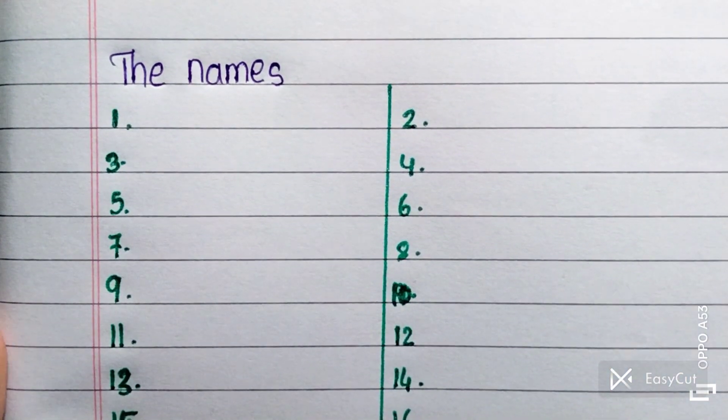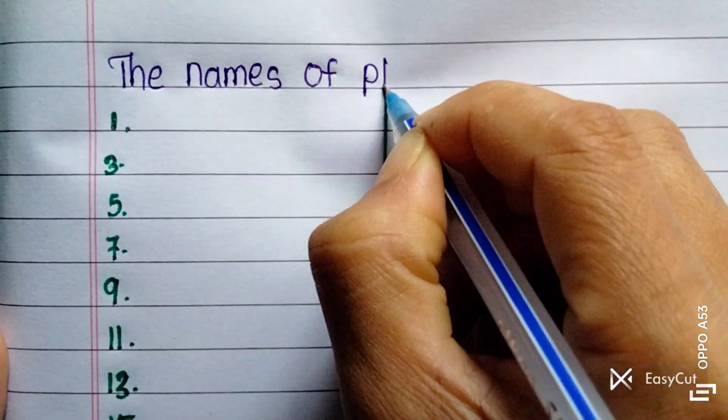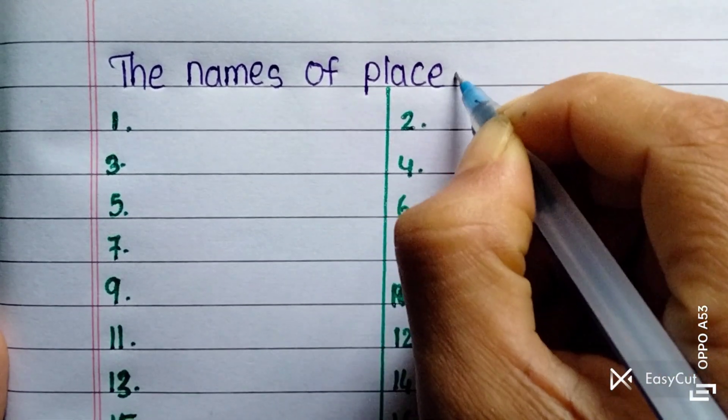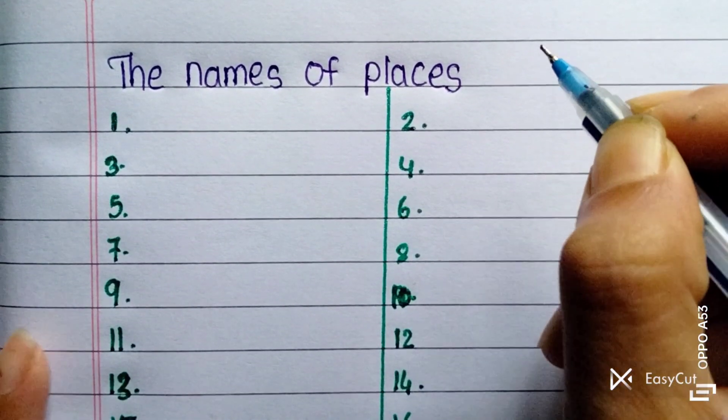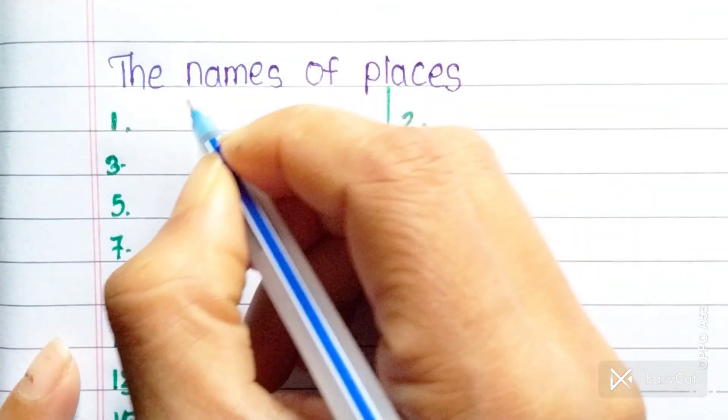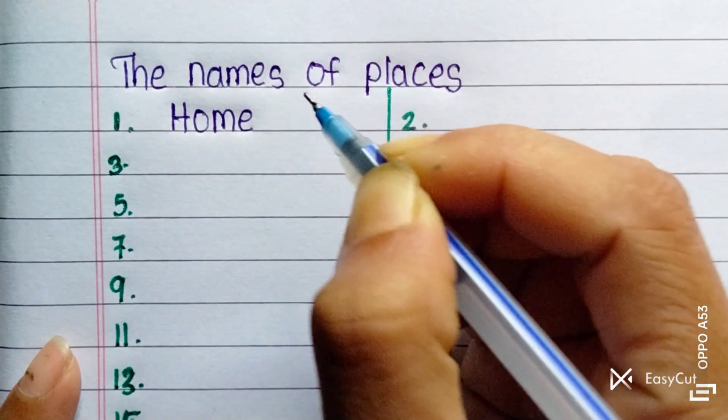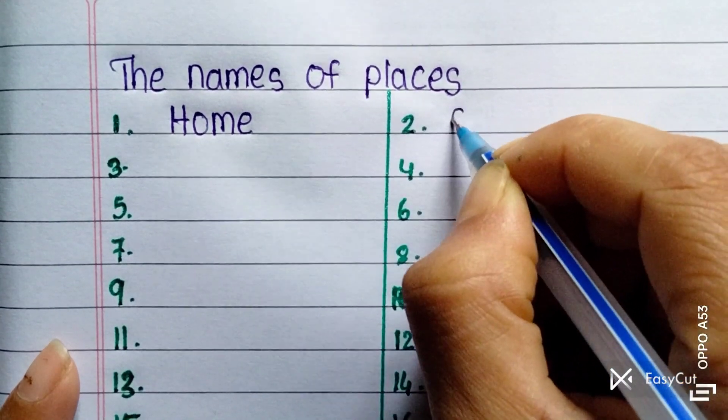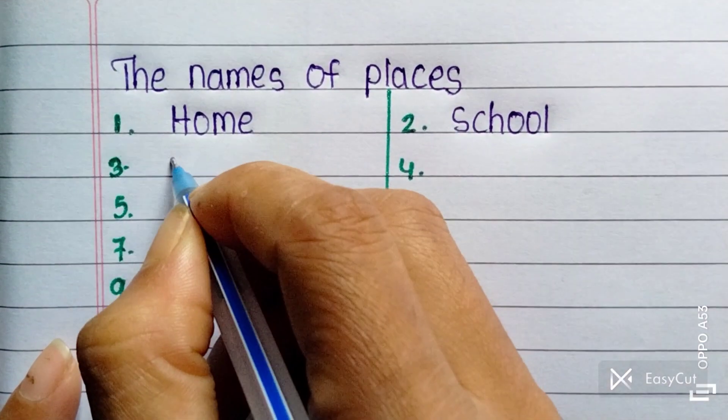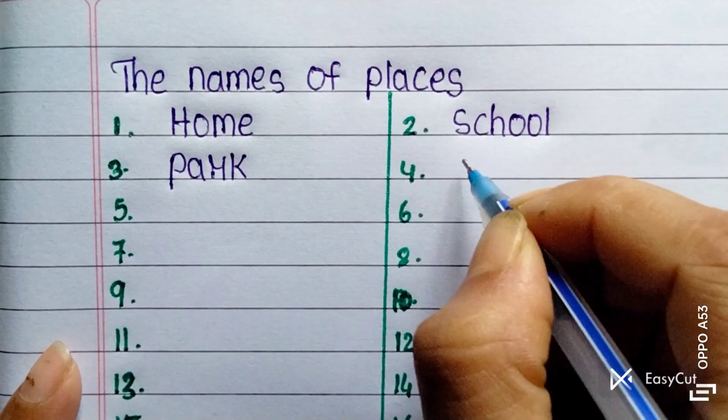The names of places. First one is home, school, park, temple.